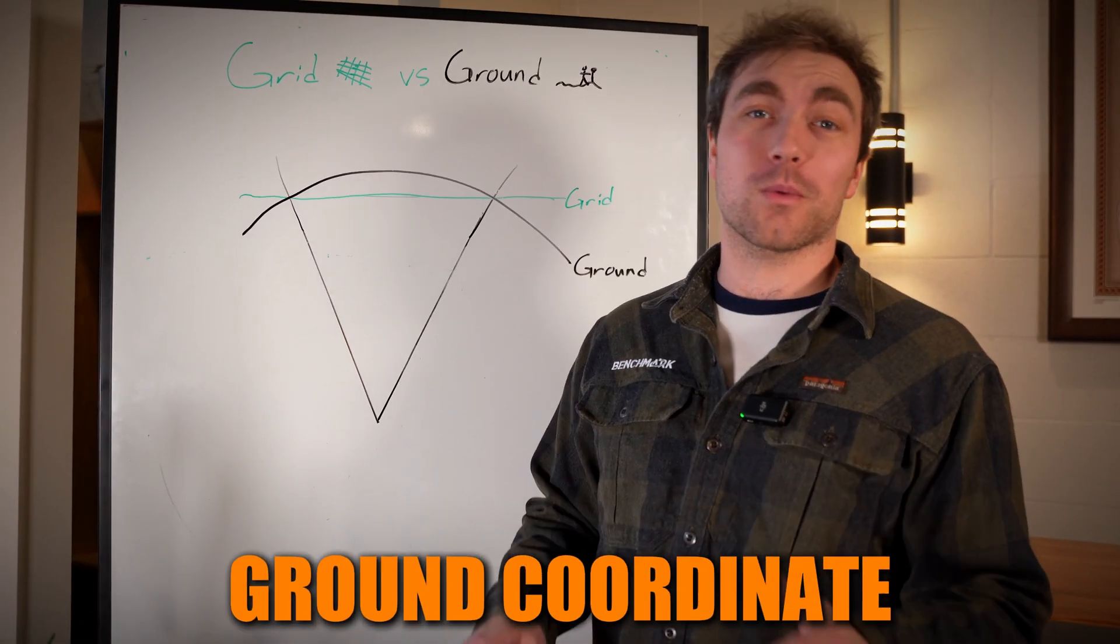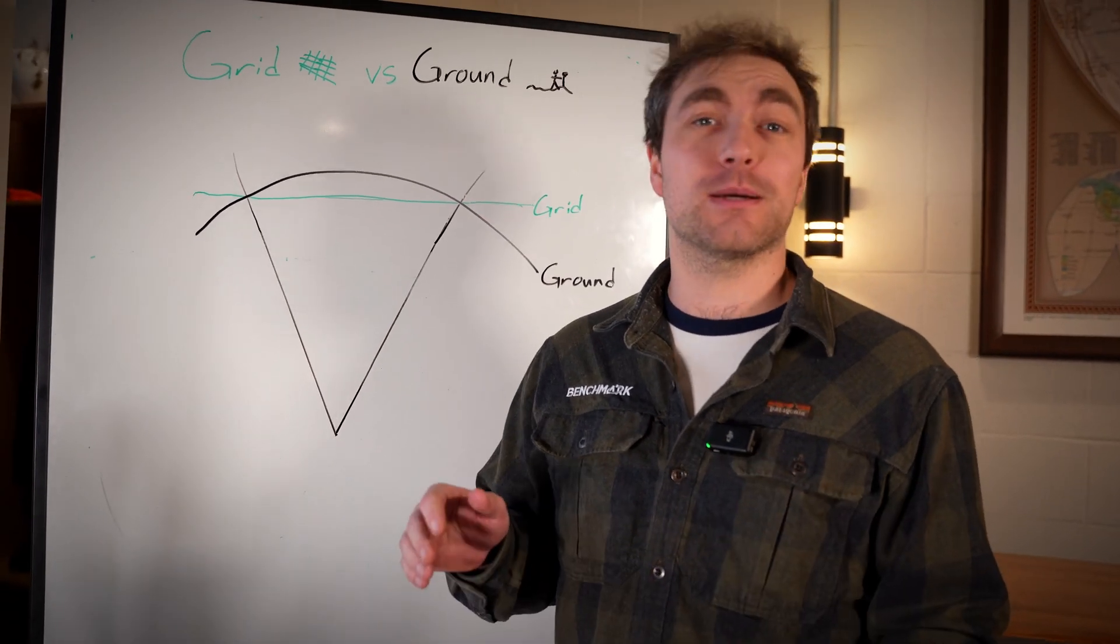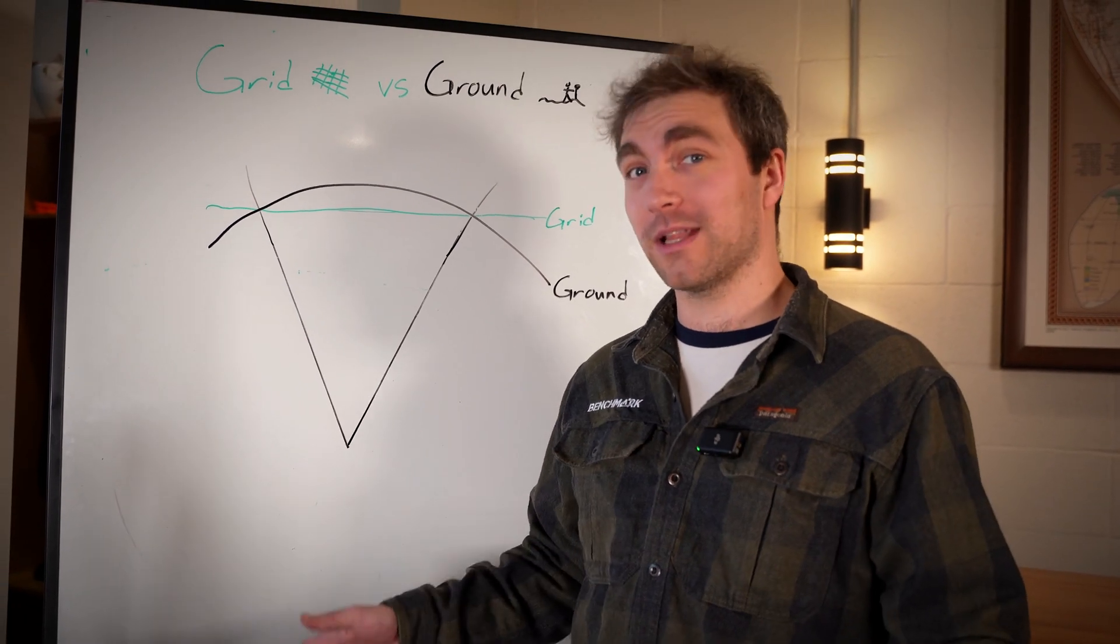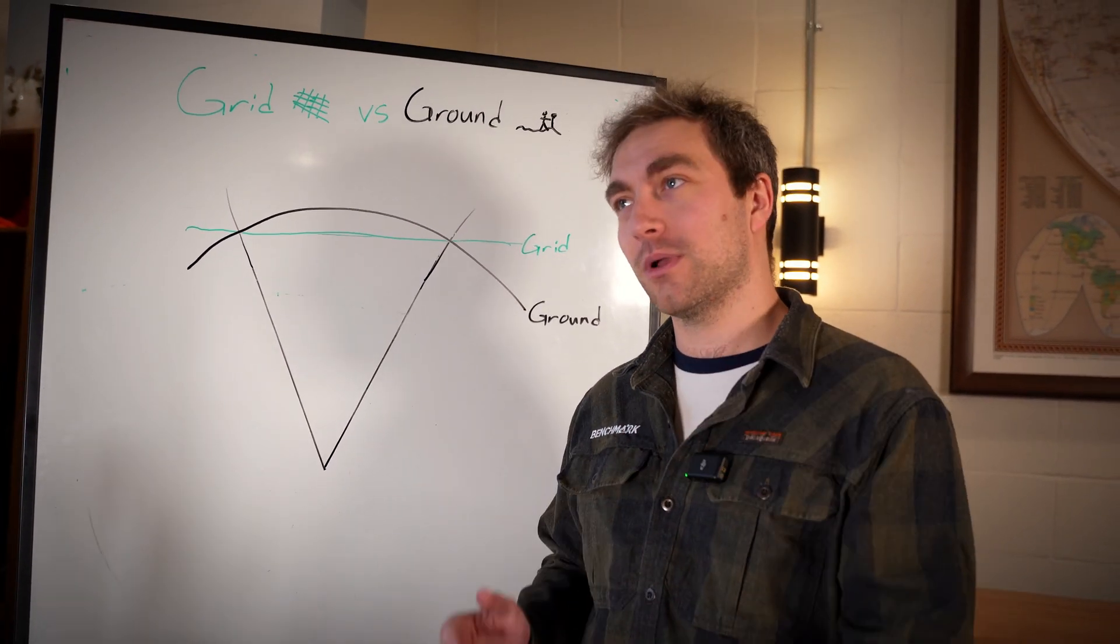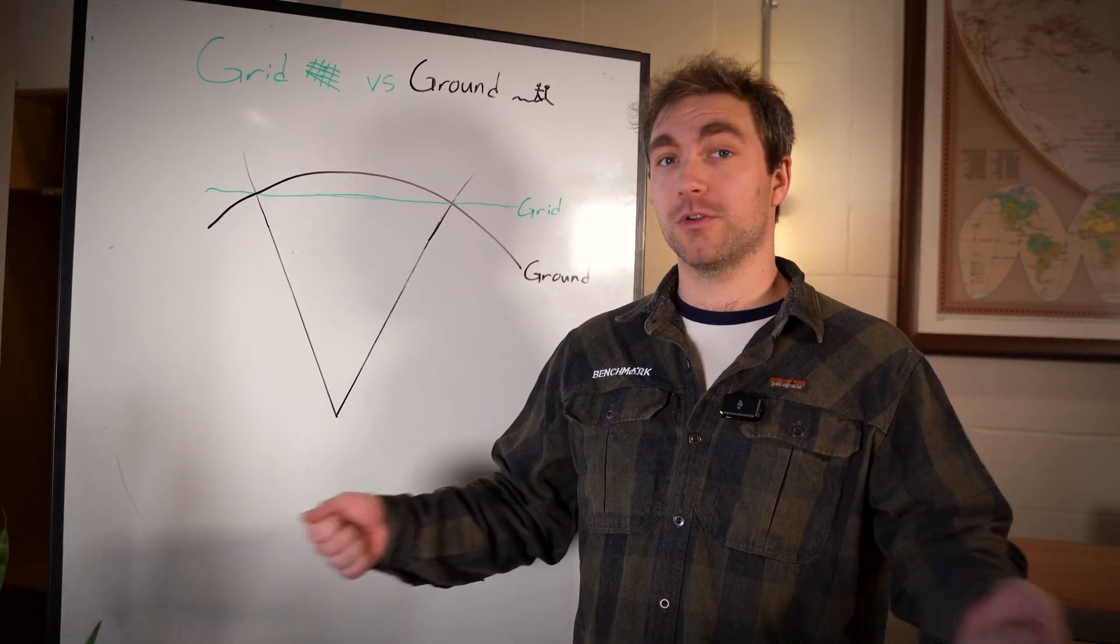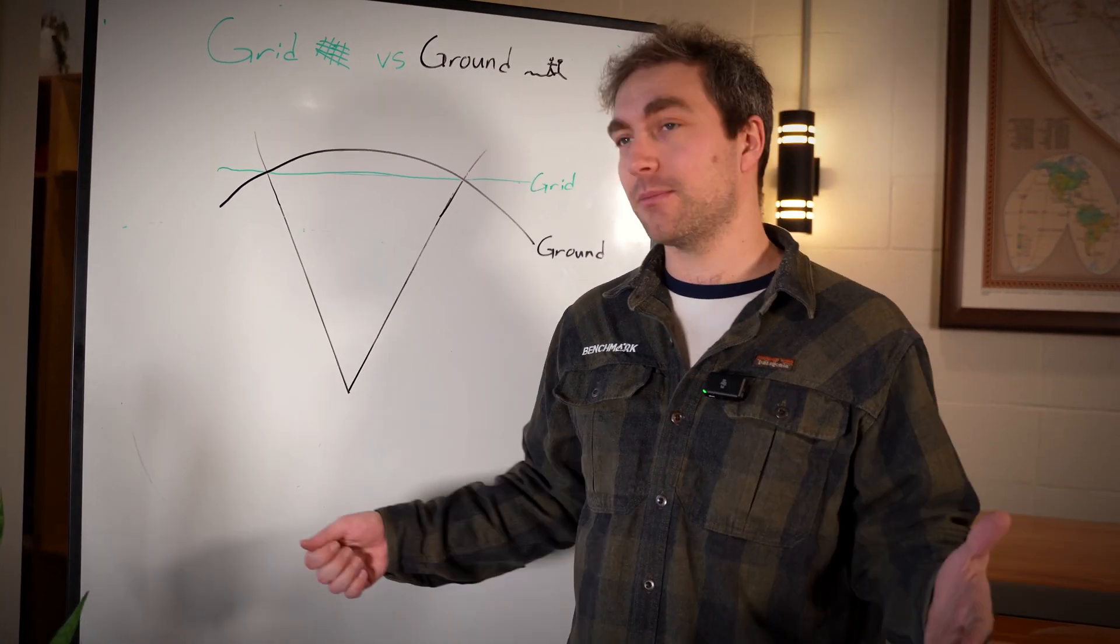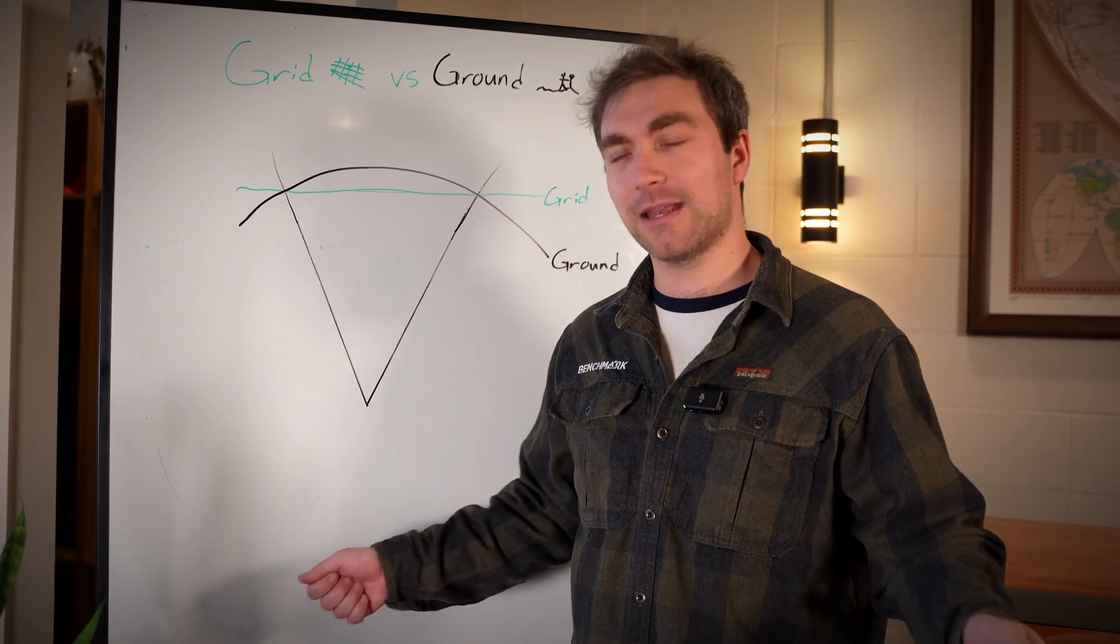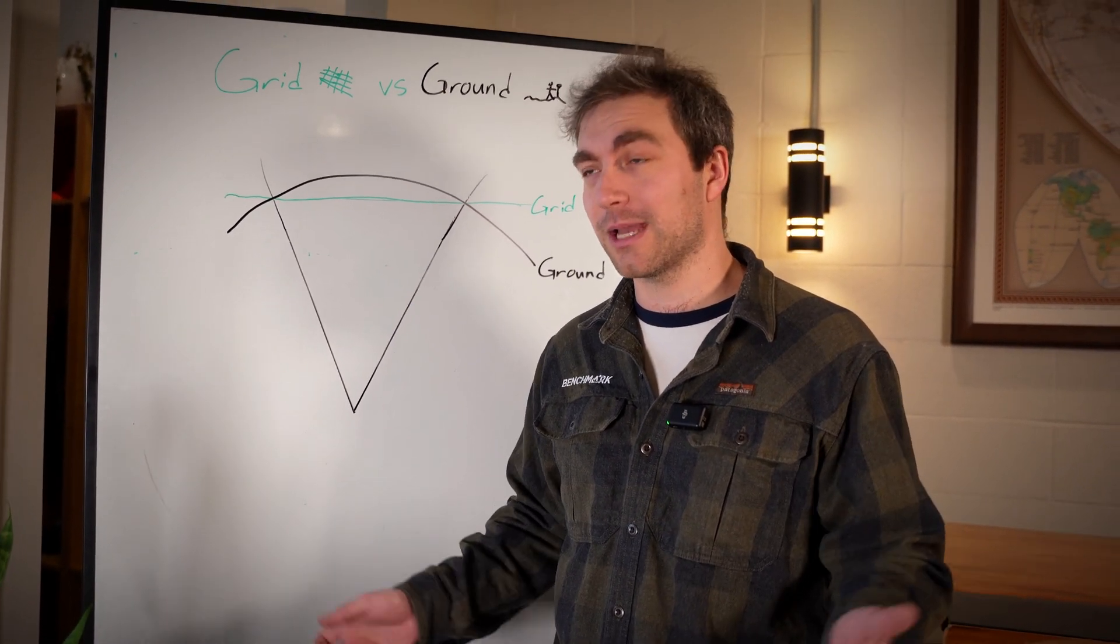The second type of coordinate is a ground coordinate. Ground coordinates are the type of coordinates that people in the real world like to use because when you have a one meter difference in a ground coordinate, that's one meter as you'd measure it on your tape. There's no distortion.